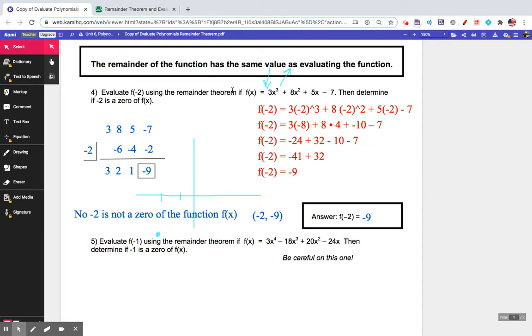I have a polynomial function here for you, f(x), and it is a cubic of degree three. It has four terms: 3x³ + 8x² + 5x - 7. And I want to know if negative two is a zero of the function.